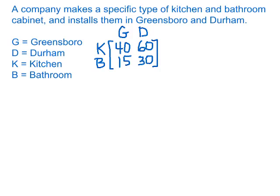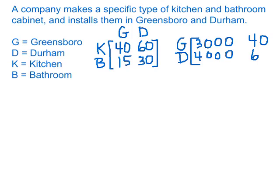That two-by-two matrix shows the number of jobs of each type in each of the two cities. Let's create another matrix to show what goes into a project — also two-by-two, using Greensboro and Durham as row labels. The first column will be dollars and the second will be hours: it takes $3,000 and 40 hours to do a project in Greensboro, and $4,000 and 60 hours in Durham.